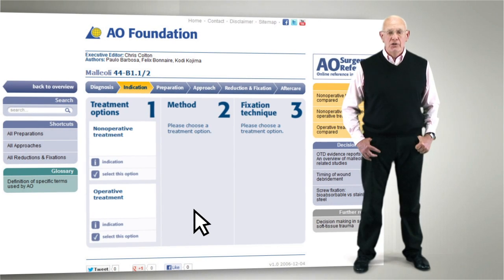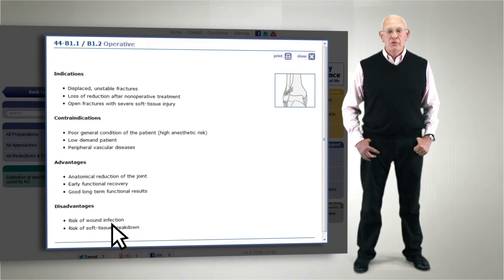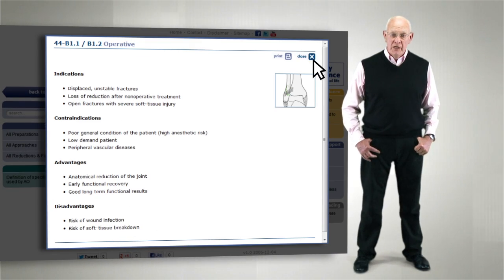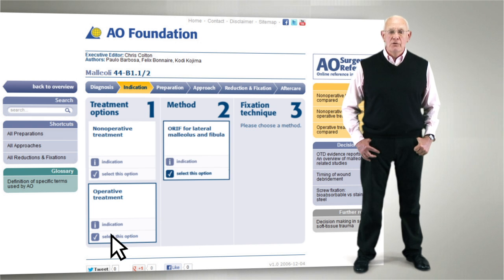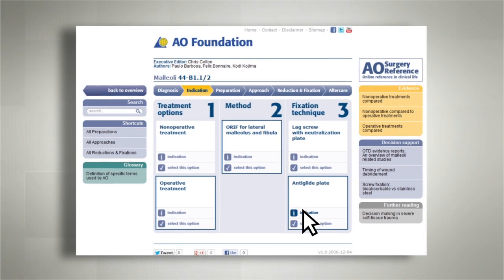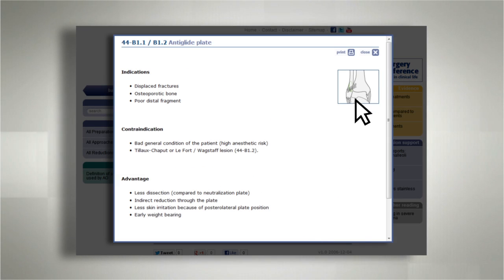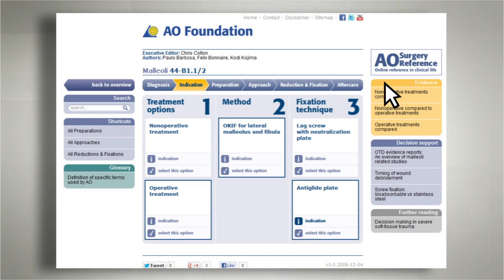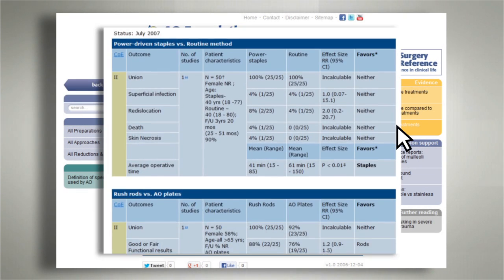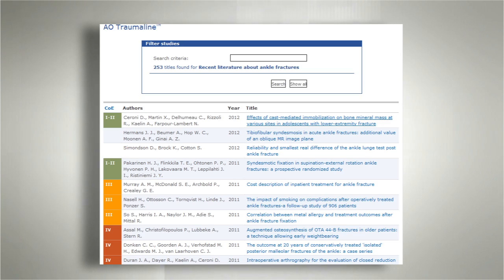In the Indications section, AO Surgery Reference supports you in your decision-making and your choice of the most suitable treatment option. It offers decision pathways and relevant evidence as well as access to trauma line.